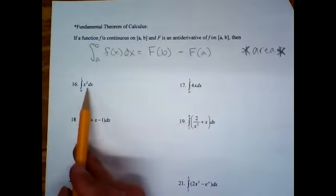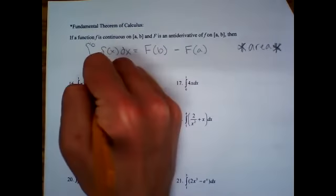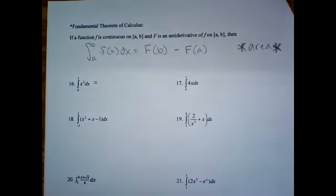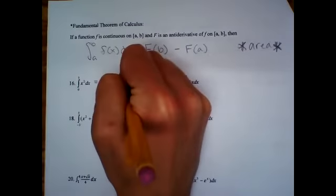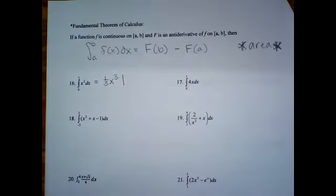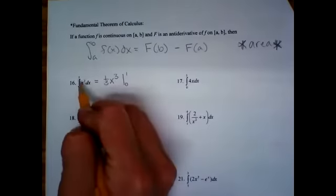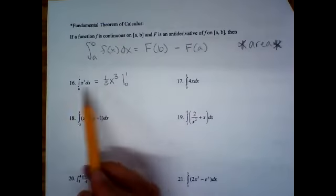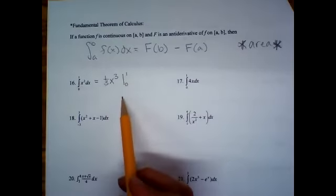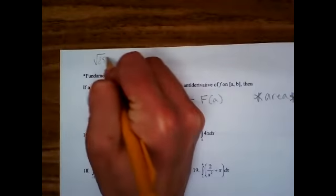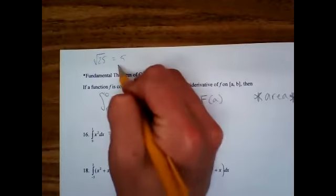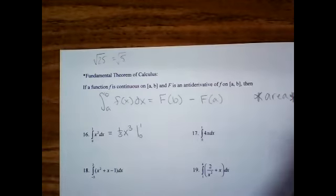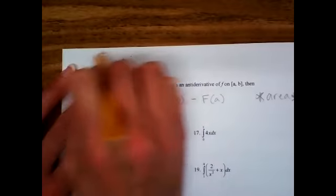So for this first one, the antiderivative of x squared — what would that give us? One-third x cubed. Then you put this bar that means 'such that.' You want to evaluate from zero to one. People always ask: when do I stop writing the integral symbol? Once you do the antiderivative, that's where you drop that and put the such-that bar. It's kind of like when you do a square root — once you do it, you don't write the symbol anymore. Once you do the antiderivative, you no longer write the integral symbol.